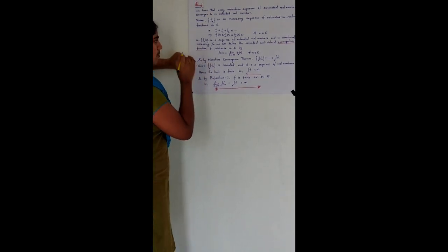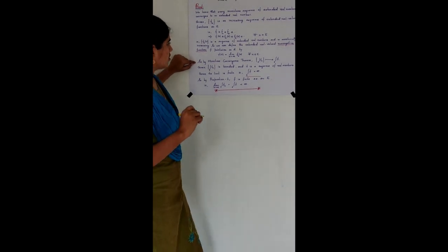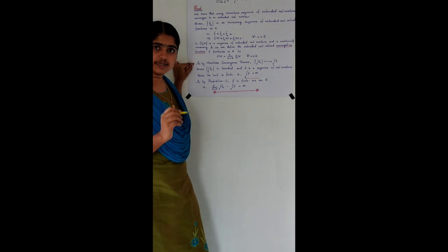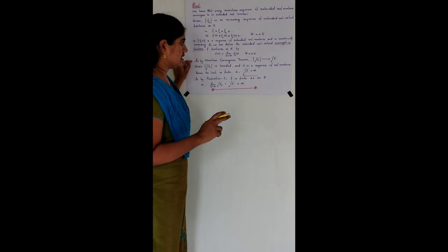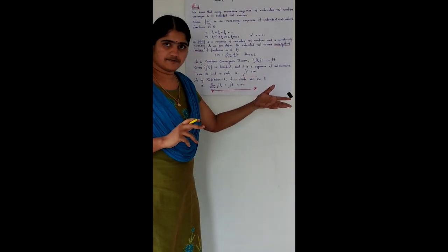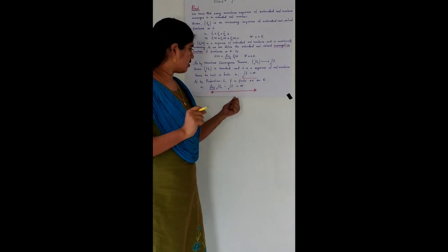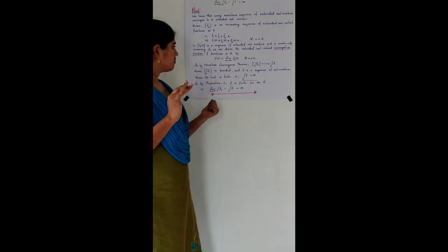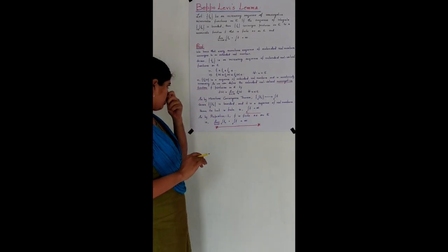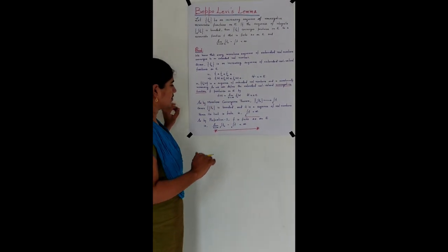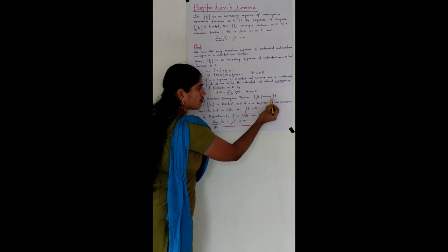By the monotone convergence theorem: for a sequence of non-negative measurable functions defined on E, if the sequence {Fₙ} converges to F pointwise on E, then the limit as n tends to infinity of the integral over E of Fₙ equals the integral over E of F. So the sequence of integrals over E of Fₙ converges to the integral over E of F.